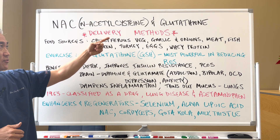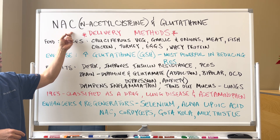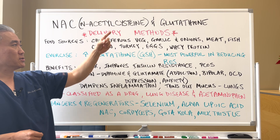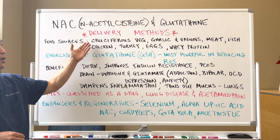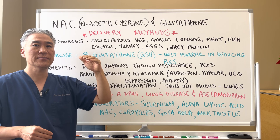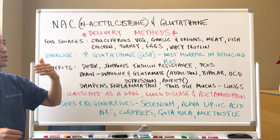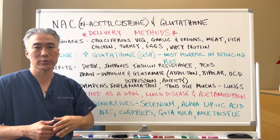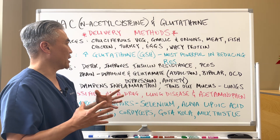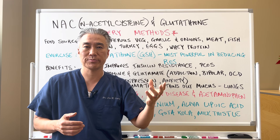NAC delivery method. Food sources first. So NAC or N-acetylcysteine, you can get from cruciferous vegetables, garlic, onions, meat, fish, chicken, turkey, eggs, and whey protein. Basically, it's prevalent in animal products and garlic and onions and cruciferous vegetables.